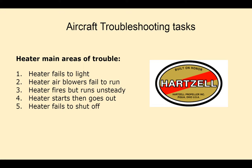Here we have the five main areas of trouble in hot cell heaters: the heater fails to light, the heater air blowers fail to run, the heater fires but burns and stays steady, the heater starts and then goes out, and the heater fails to shut off.